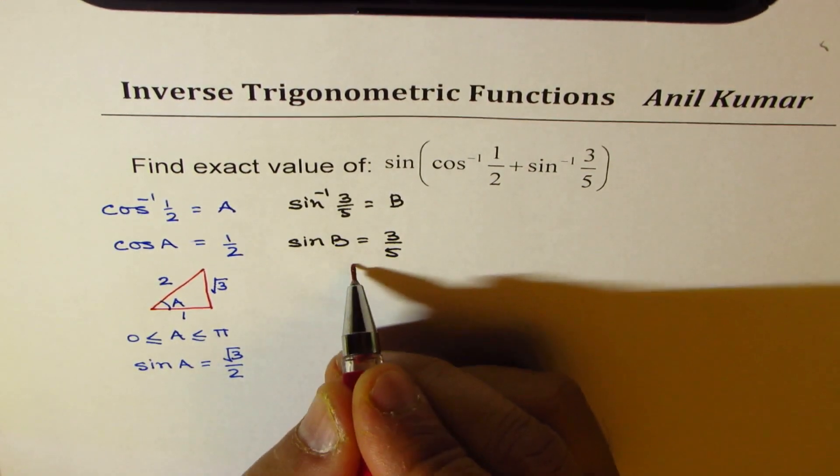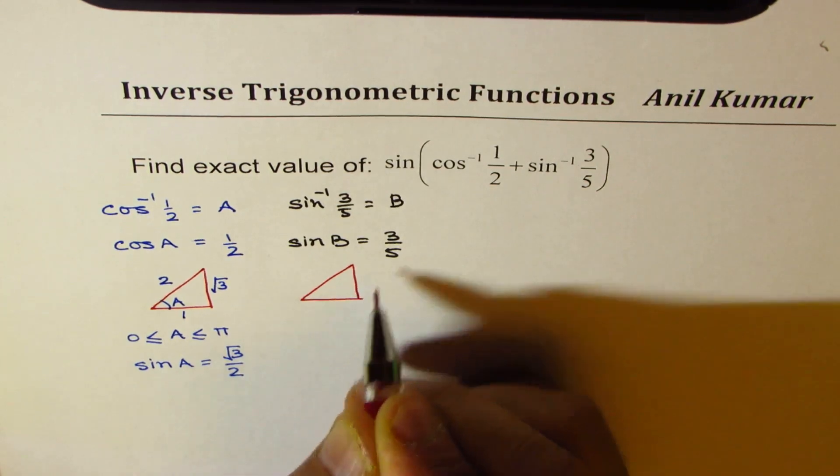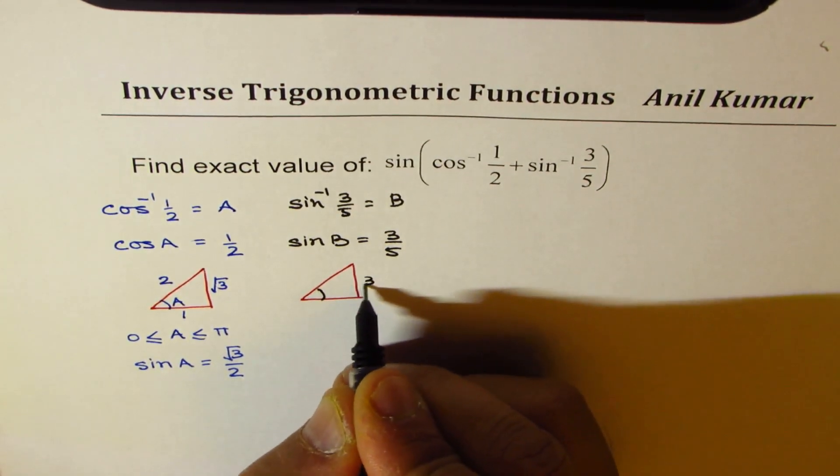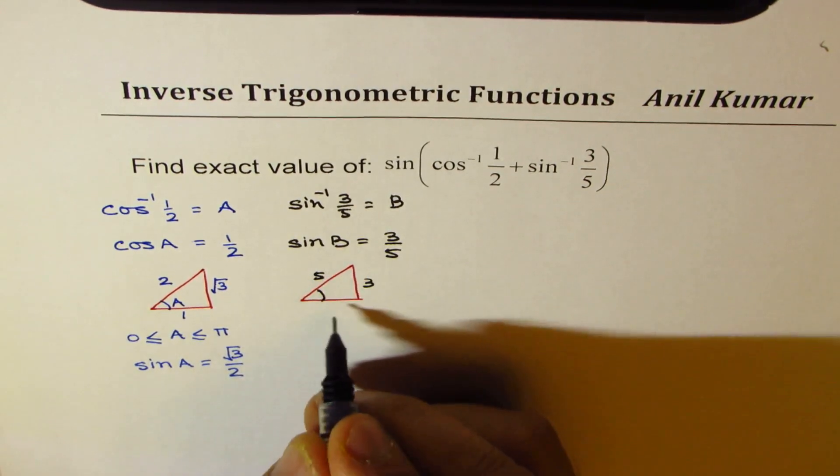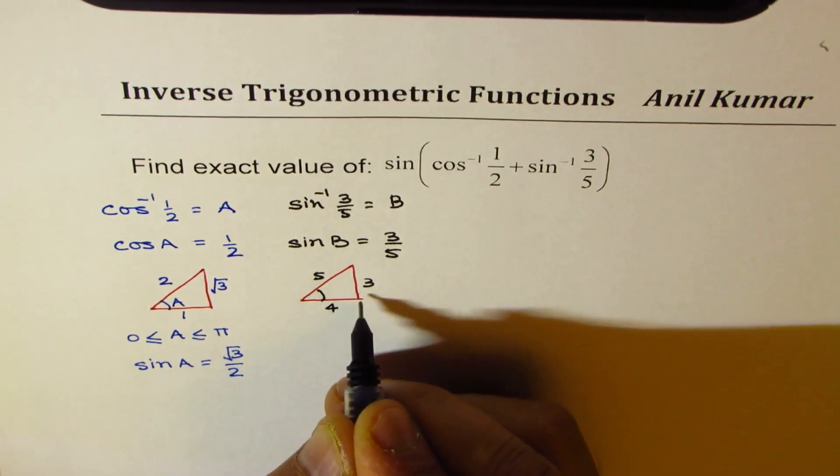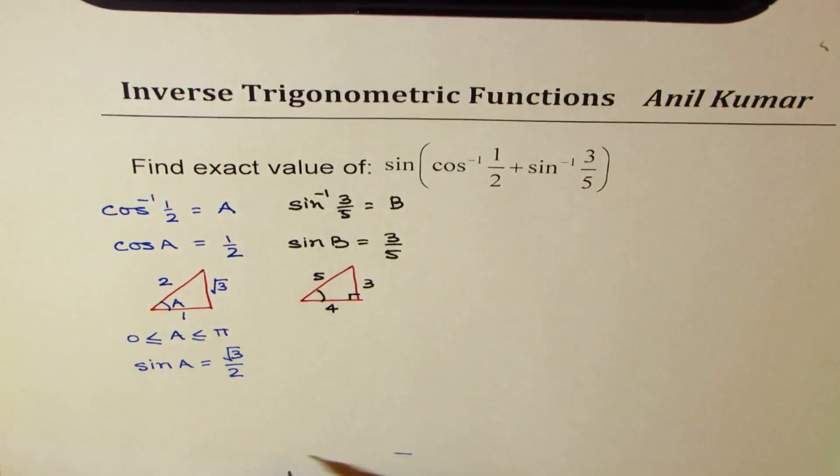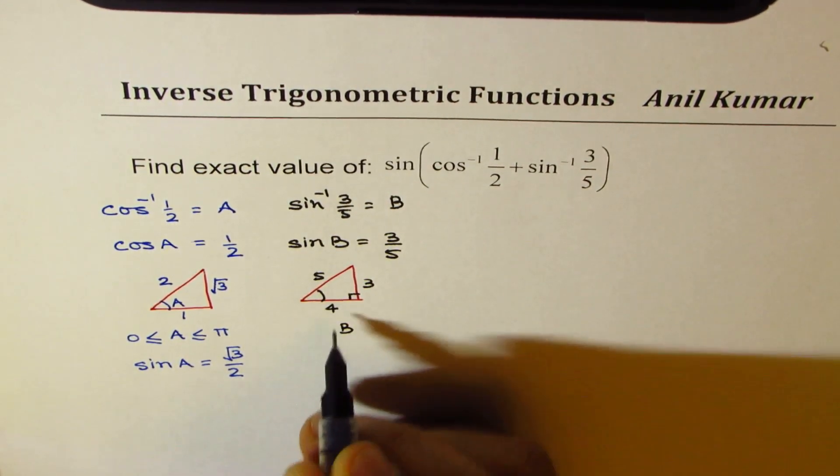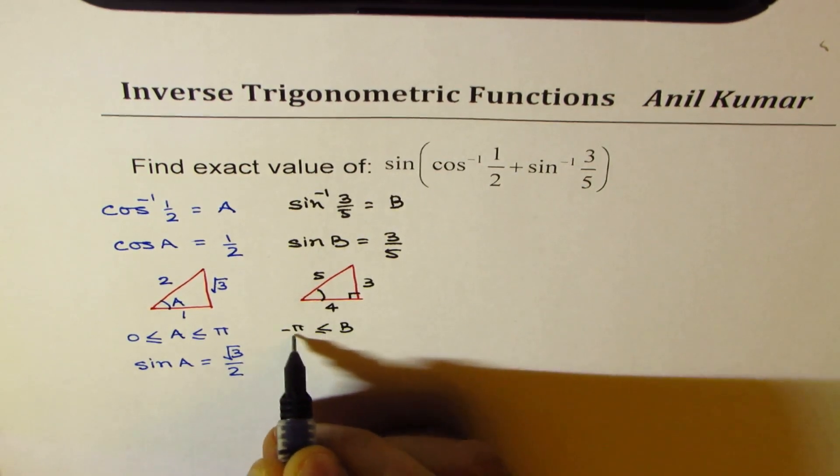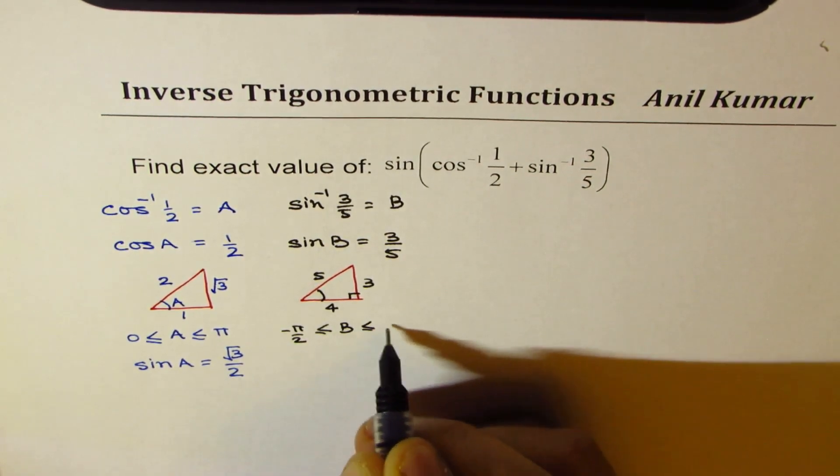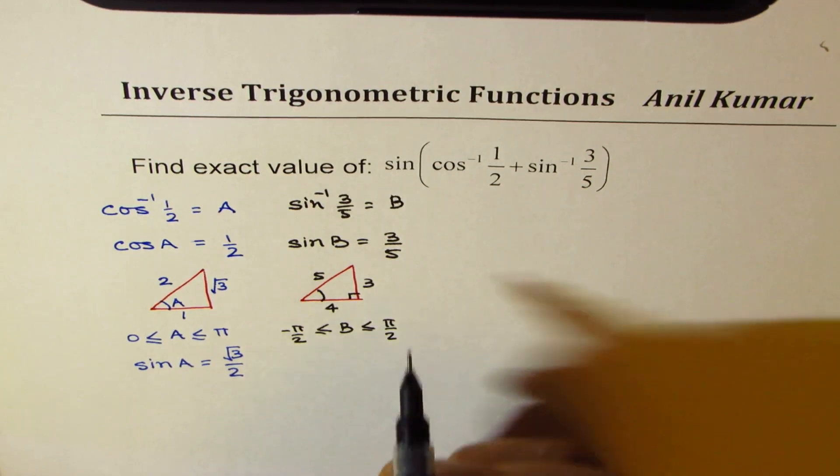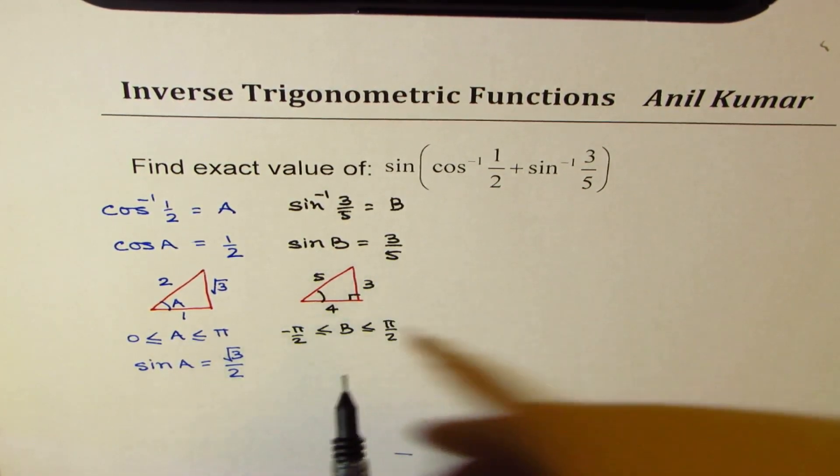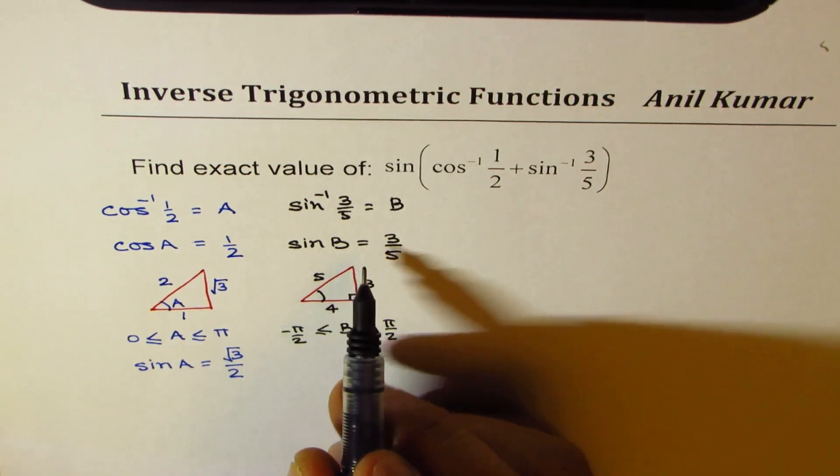You can form a triangle with 3 as opposite side and 5 as hypotenuse. Adjacent will be 4, since this is a right triangle. For a sine inverse function, B has to be between minus pi by 2 to plus pi by 2. Now since sine is positive, we are in quadrant 1.